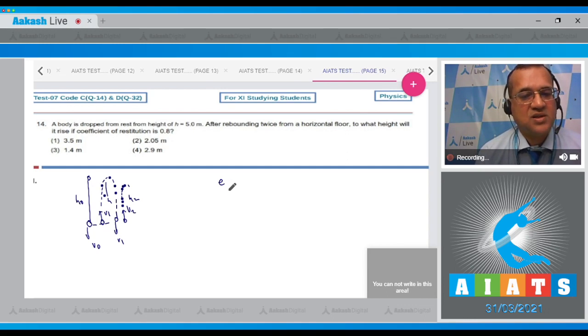Now you know that what is the coefficient of restitution: velocity of separation to the velocity of approach. In the first case this is v₁ minus 0 divided by v₀ minus 0. And the second case, e will be velocity of separation v₂ at rest and v₁ minus 0.